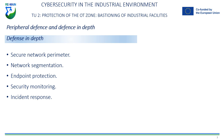Some common defense in depth techniques include: secure network perimeter — a defense in depth technique that involves creating a security perimeter on the network. This is achieved by implementing a firewall and configuring rules that control access to network resources and restrict incoming and outgoing traffic.